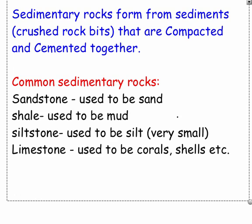Sedimentary rocks form from sediments — crushed rock bits, weathered and eroded rock material — that are compacted and cemented together. There are four really common ones: sandstone, which used to be sand; shale, which used to be mud; siltstone, which used to be very fine silt particles; and limestone, which used to be corals and shells.